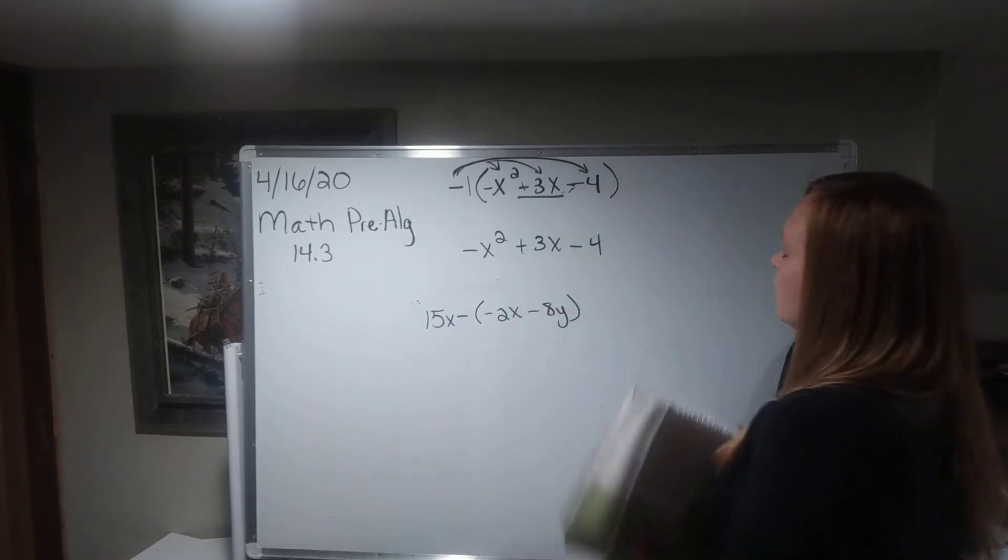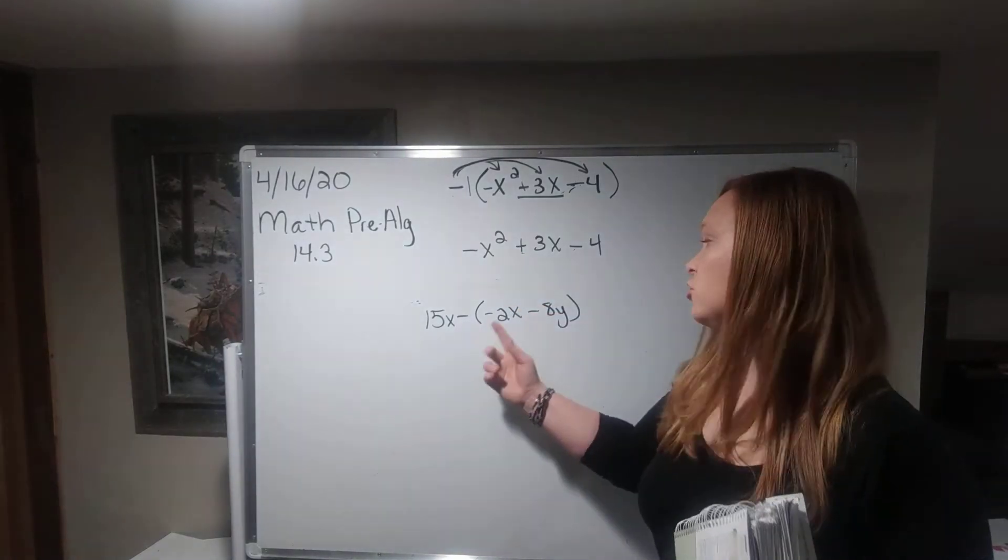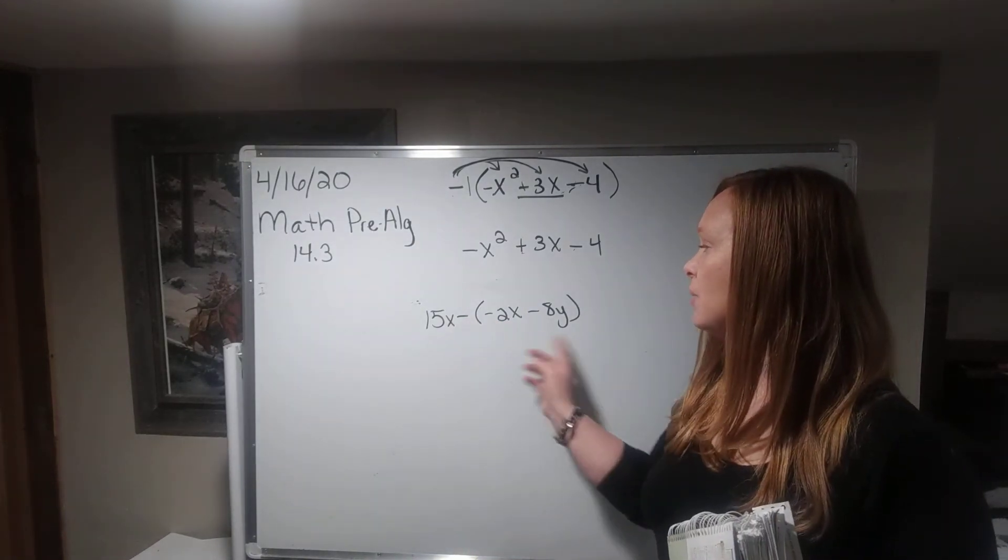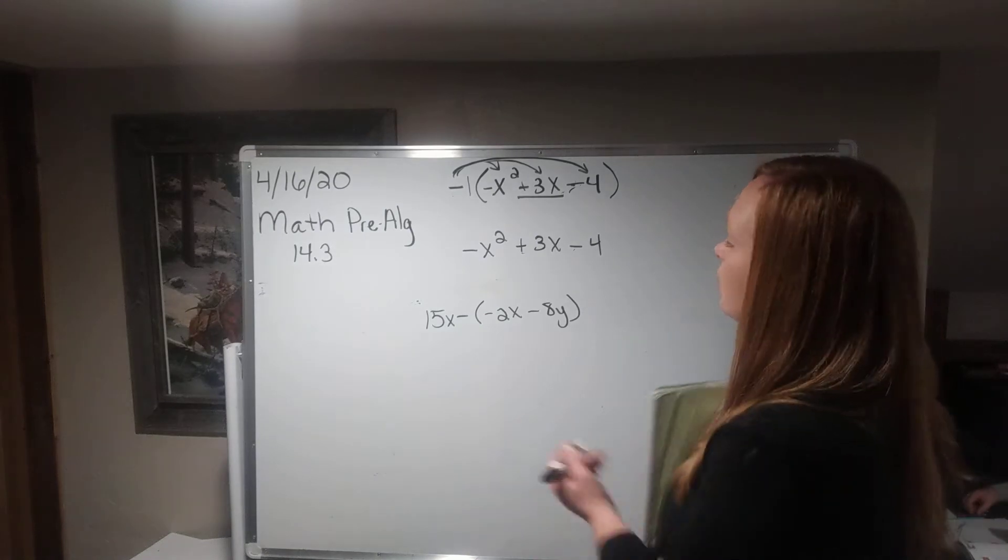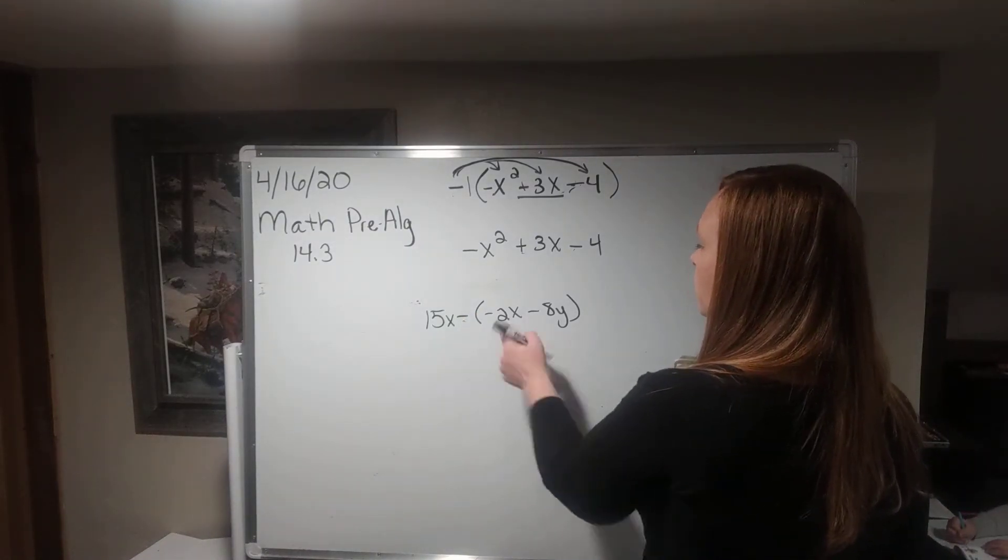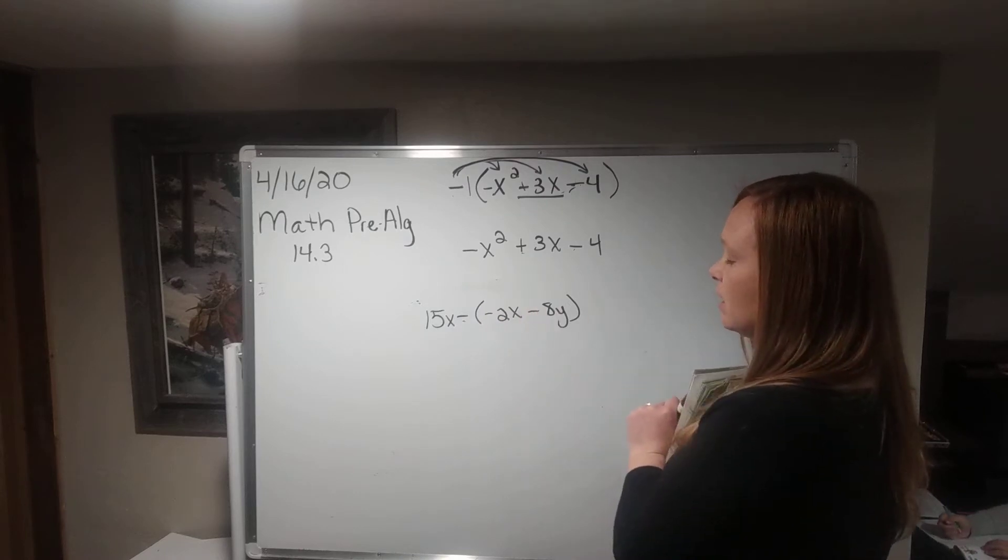Okay, so a little bit different. When we had addition on the outside, we were able to just drop those parentheses, but we can't do that with subtraction because we're looking for the opposite of what's inside. So I have this negative on the outside, so in order to drop these parentheses, I need to do the opposite inside.